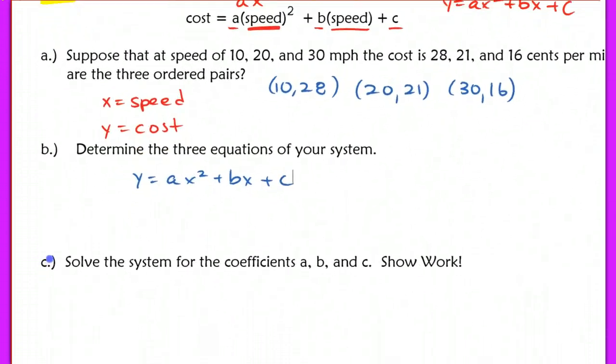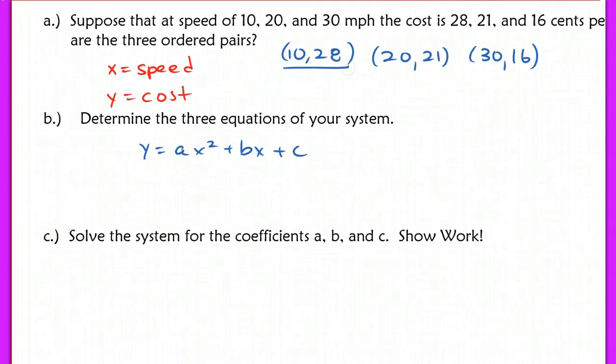Our first coordinate is the coordinate 10, 28. Remember, x is 10, 28 is y. So I'm just going to substitute that back in. 28 is going to substitute in for the y. So I have 28 equals. a is not going to change. a is still going to stay a. However, x is now 10. So I have a times 10 squared plus b times 10 plus c.